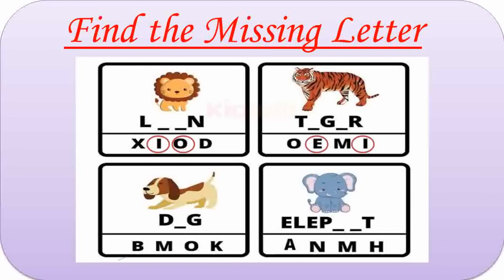Third one is Dog. Missing letter is O. D-O-G. Dog. In the fourth one, the animal name is Elephant. E-L-E. Missing letters are H, A and N. The word is Elephant. E-L-E-P-H-A-N-T.